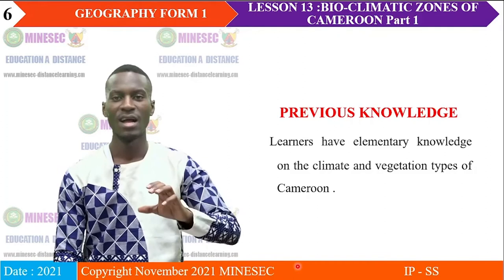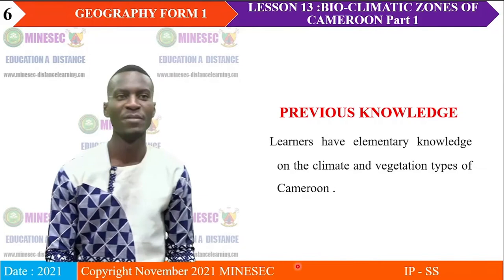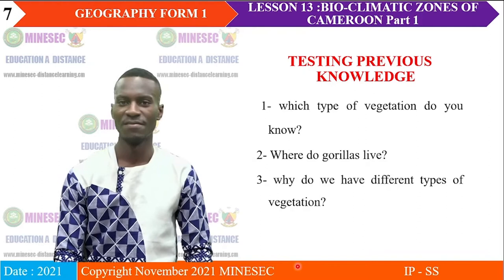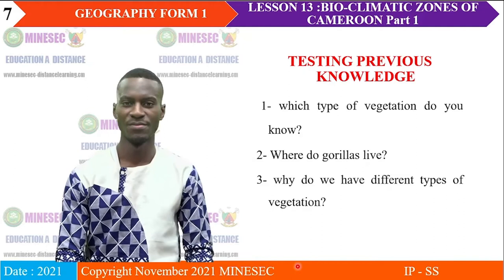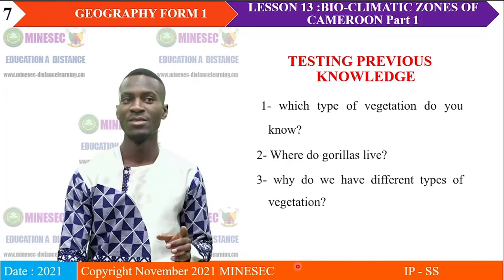To better understand this lesson, you should have an idea about the climate and the vegetation types of Cameroon. That is why the assignment was to give the two seasons — the rainy and the dry season. How long is the rainy season in a given place? How long is the dry season? We are going to see the influence of the climate on the vegetation and the soil of various parts of Cameroon. Which type of vegetation do you know? Why do we have different types of vegetation? You are supposed to give answers at the end of this lesson.